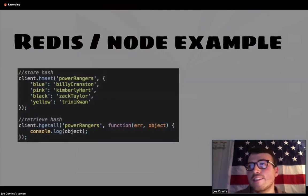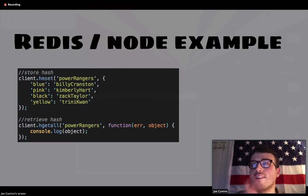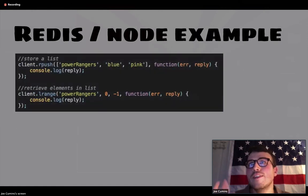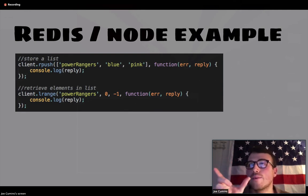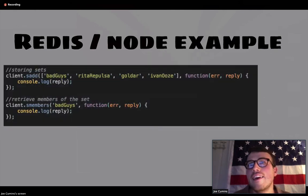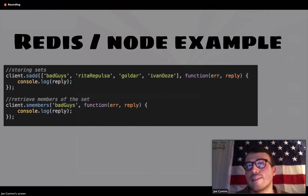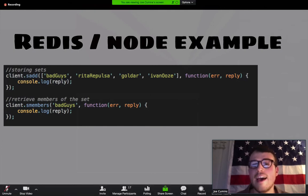This is how we store a hash. We use hmset as the command. Our key is Power Rangers, the first argument, and the second argument is the key-value pair. Then we use hgetall as a command to get the entire hash. To store a list, we can use rpush or lpush depending on whether you want to go left or right, and then use lrange to retrieve elements in a list — negative one means we want the whole thing. For storing a set, we use sadd, and then retrieve the items with smembers.